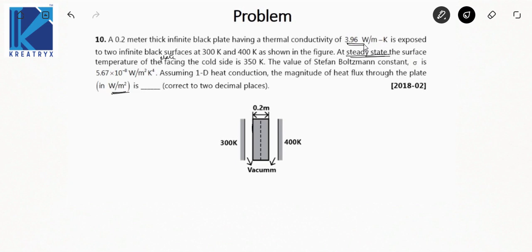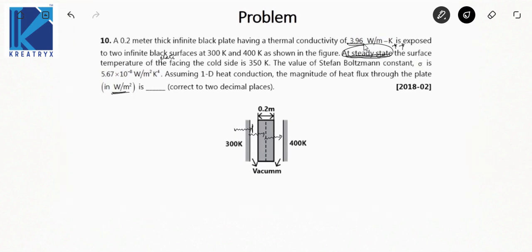The question states 'at steady state' — this is an important keyword. At steady state, the heat transfer from all parts is equal: whatever heat is being transferred through this space will be transferred through this plate. So the question asks for the magnitude of heat flux through the plate. If I find the heat flux from this space, that will equal the heat transfer rate through the plate.